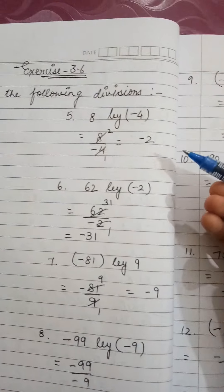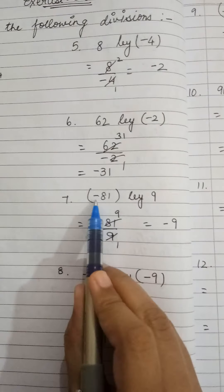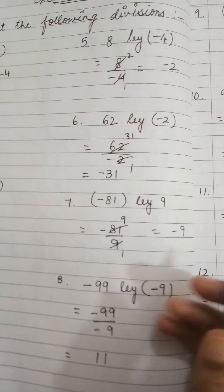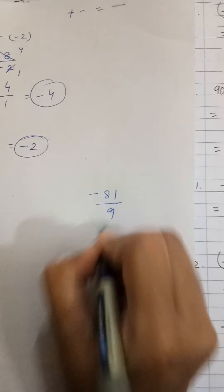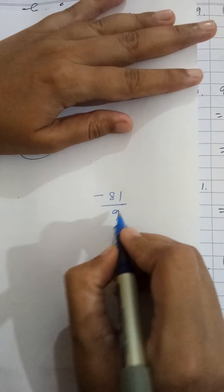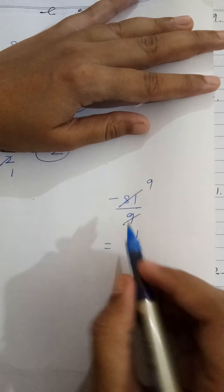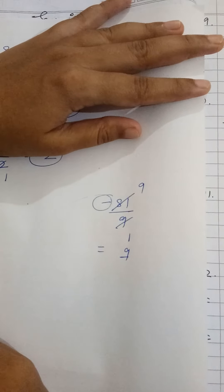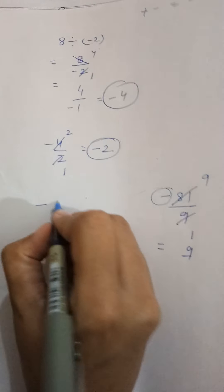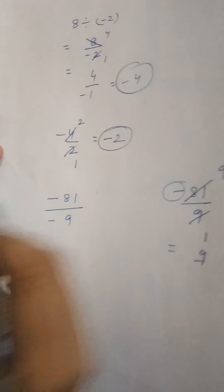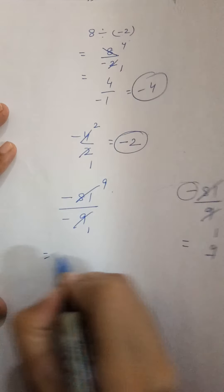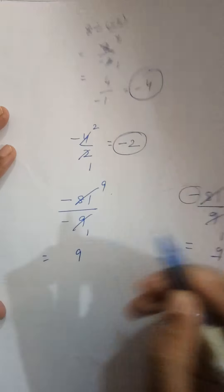You can do the 5th and 6th parts also. Let me do the 7th part — it is also the same. Minus 81 you have to divide by 9. So minus 81 divided by 9: 9 nines are 81, so it is coming 9 but with the negative sign. If it would have been minus 81 upon minus 9, then 9 nines are 81, but what is minus minus? Plus. So the answer would be 9 of plus.